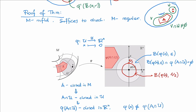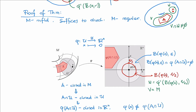In this situation we can define the desired open neighborhoods as follows: set W to be the inverse image under phi of the open ball with center phi(X) and radius epsilon over 2, and set V to be the complement in the manifold M of the inverse image under phi of the closure of the ball with radius epsilon over 2.